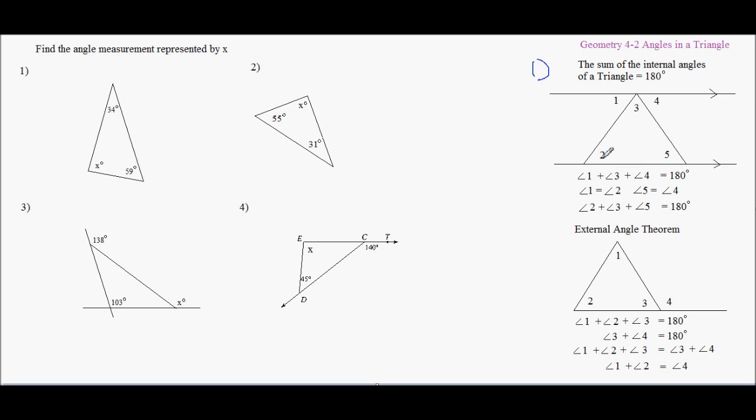And then, because these are parallel lines, these alternate interior angles have to be equal. So angle 1 is equal to angle 2. And these are alternate interior, so 5 equals 4. If you substitute 2 in for 1 and 5 in for 4, you get angles 2 plus 3 plus 5 equals 180. That's how that works.